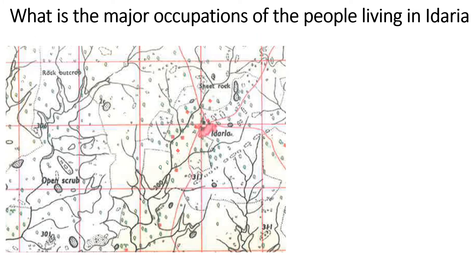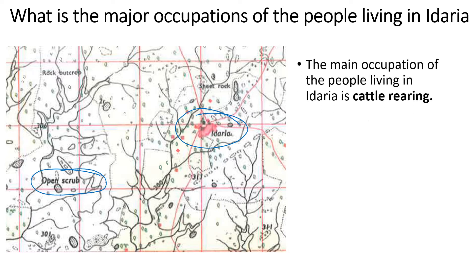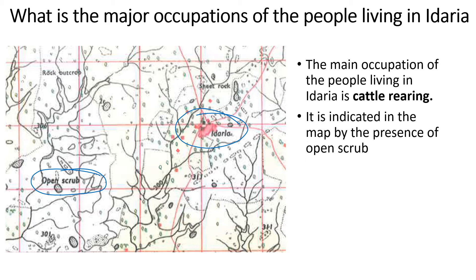What is the major occupation of the people living in Idaria? Idaria is here in the center. We can see that mostly around Idaria it is white barren land and open scrub. So in this case you can say the main occupation of the people living in Idaria is cattle rearing, animal rearing, or goat rearing. It is indicated on the map by the presence of open scrub.